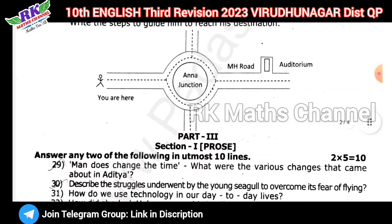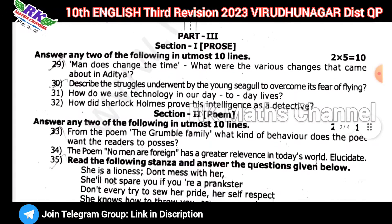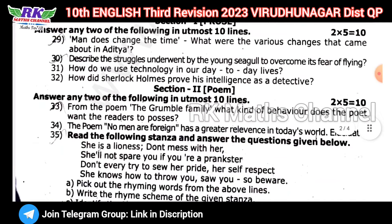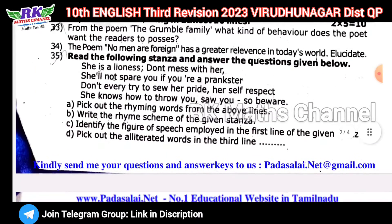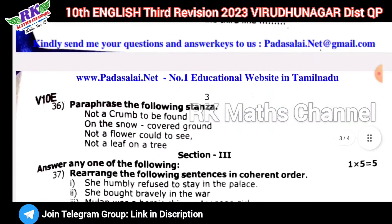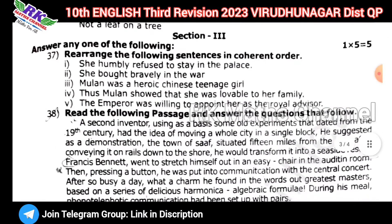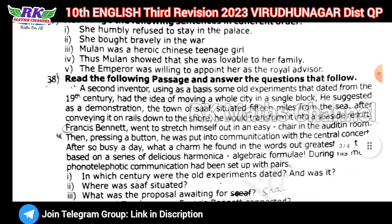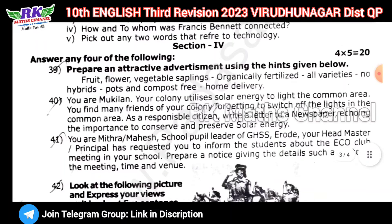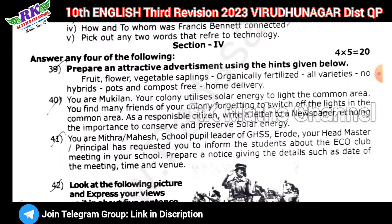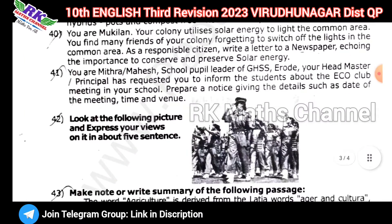Okay, Part 3 — Paragraph questions. Section 1: Prose, 2 questions. Section 2: Paragraphs. Section 3: Grammar, 3 questions, any one question. Section 4: Grammar, 3 questions. Writing skills — notice writing, letter writing, picture explain, sentence.